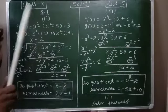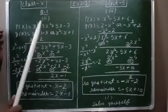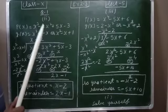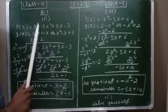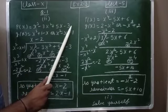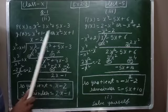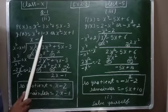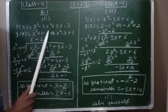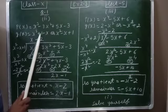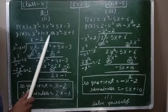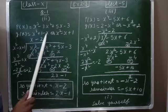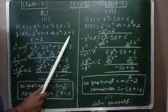First step: the polynomial should always be in standard form. Standard form means the powers should be in decreasing order — like 3rd power, 2nd power, 1st power, and if the variable is not present, then 0 power. But if we see here: 2nd power, 0 power, then 1st power — so we have to rearrange. We will write x squared, then minus x, then plus 1.